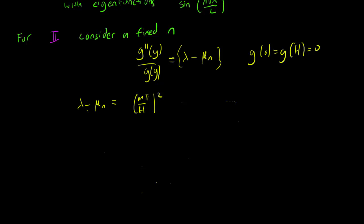we know that lambda minus mu_n has to be of the form (mπ/H)², and it is indeed an H and not an L because our g boundary conditions are g(0) and g(H), not g(0) and g(L), and m going from 1, 2, 3, and so on, with eigenfunctions for g given by sin(mπy/H).